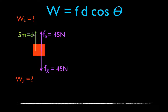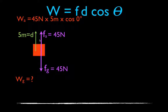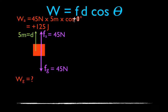For the applied force, it's Fd: the force is 45 newtons over a distance of 5 meters. What is theta in this case? Theta is the angle between the displacement and the force. The displacement and the applied force are parallel and pointing in the same direction, so the angle between them is 0 degrees. The cosine of 0 degrees is plus 1. So the work done by the applied force is 45 newtons times 5 meters times plus 1 — positive work. A force that acts in the same direction as the displacement does positive work.